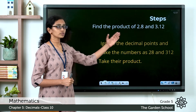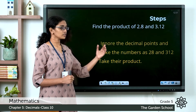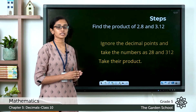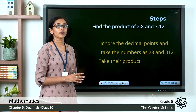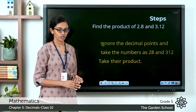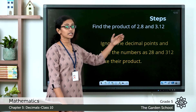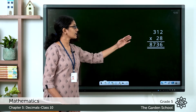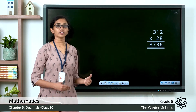So you are given two decimal numbers. To multiply the two decimal numbers, you just ignore the decimal points and take their product like whole numbers. So when you multiply 28 and 312, you get the product 8736.